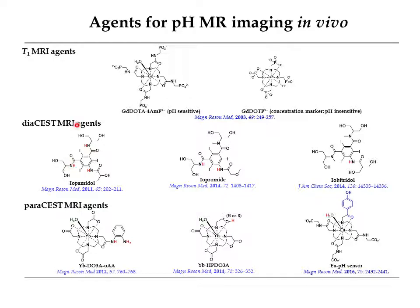For example, the diamagnetic CEST agents like iopamidol and iohexol, and the paraCEST agents like europium-DO3A-oAA and europium-HPDO3A, all have two chemically non-equivalent exchangeable protons which are pH-sensitive. The ratio of CEST intensities from the two non-equivalent exchangeable protons in each agent is dependent on pH but independent of agent concentration.